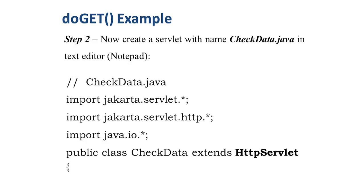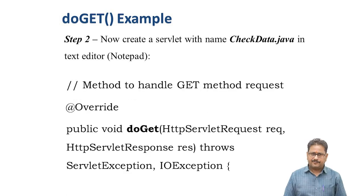Step two: create a servlet named checkdata.java. Since we wrote form action checkdata in the HTML, we name the servlet checkdata. The submit button will call this Java file when pressed. In this doGet example, in the checkdata.java file, we import packages: jakarta.servlet, jakarta.servlet.http, and java.io. We write the class name checkdata that extends HttpServlet. Then we override the doGet method, using only doGet for this example. The method signature is: public void doGet.